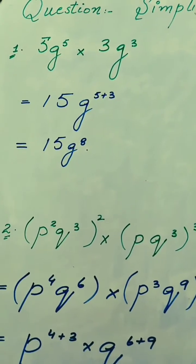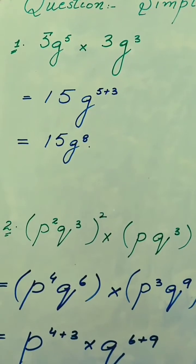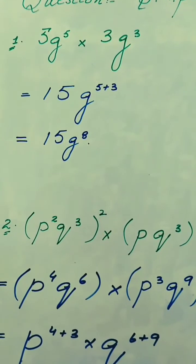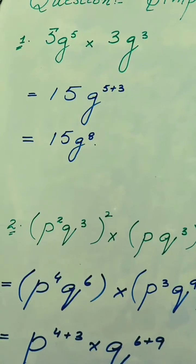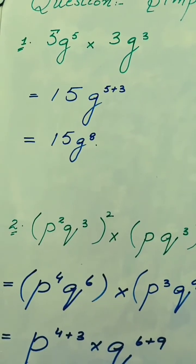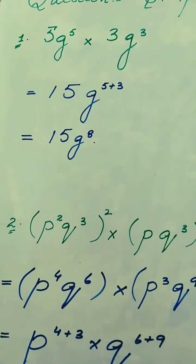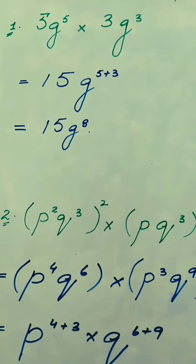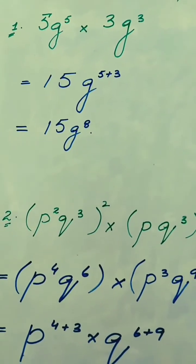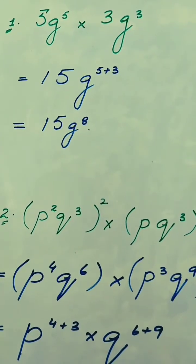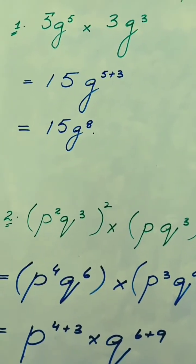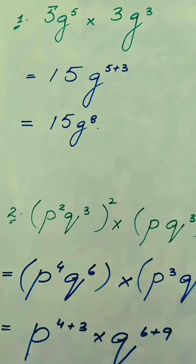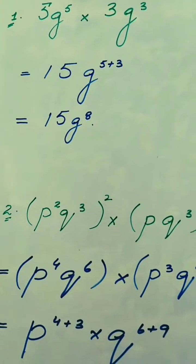First of all, the constants are multiplied with each other and the answer becomes 15. As we know, when the same variables are multiplied with each other — here the variable is g — the powers add with each other: 5 plus 3. So the final answer will become 15g raised to the power 8.